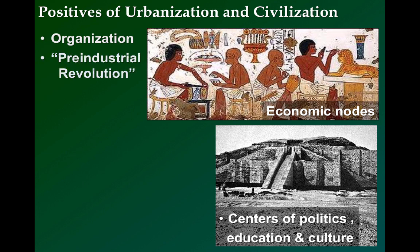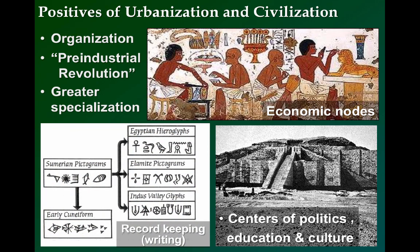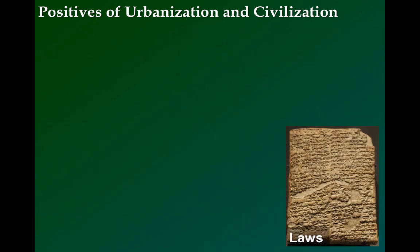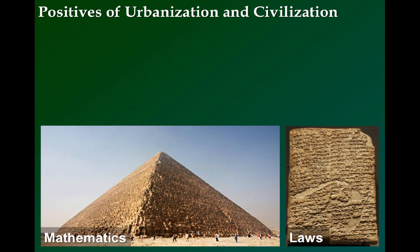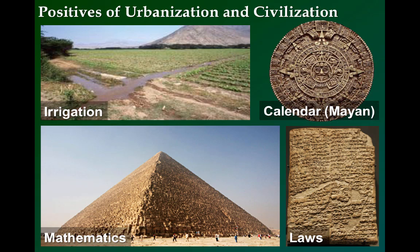A sort of pre-industrial revolution took hold in the cities with so many specialists thinking and working collectively. Language also became more specialized, and written language was invented, likely initially by accountants to tabulate goods and taxes. Written language allowed laws to be codified and for science and discovery to often flourish. Mathematics allowed for larger structures to be built, for irrigation to be organized, and for accurate calendars to be created.